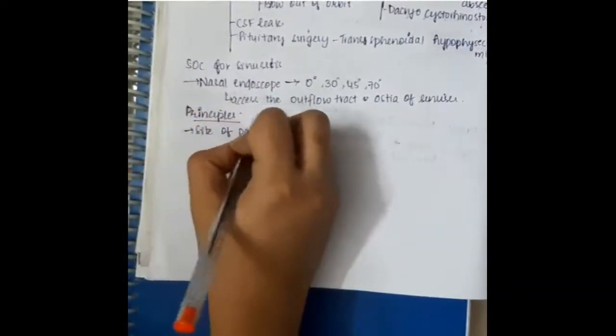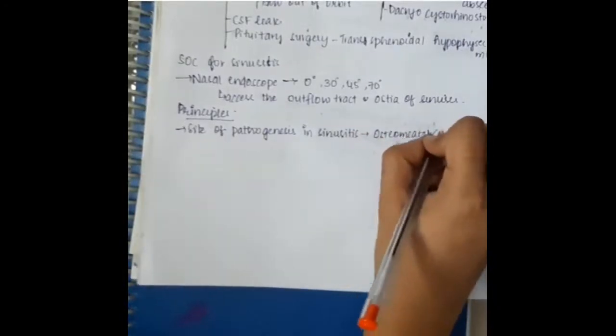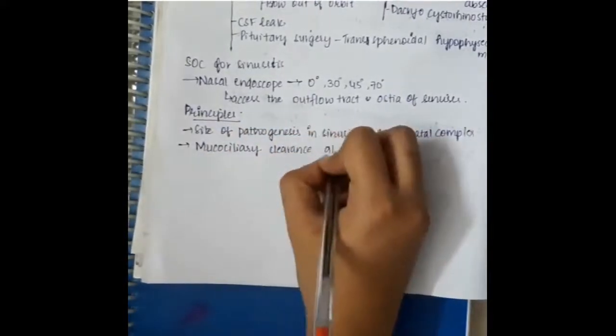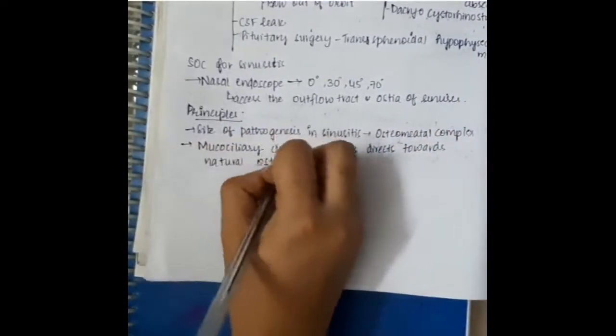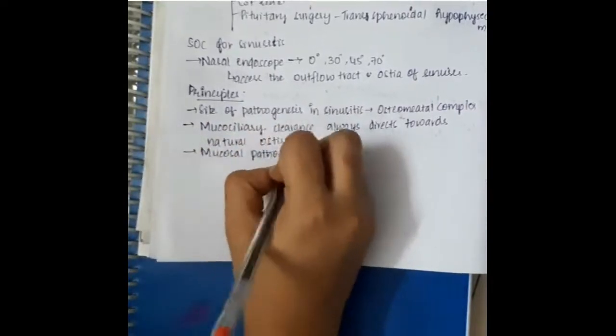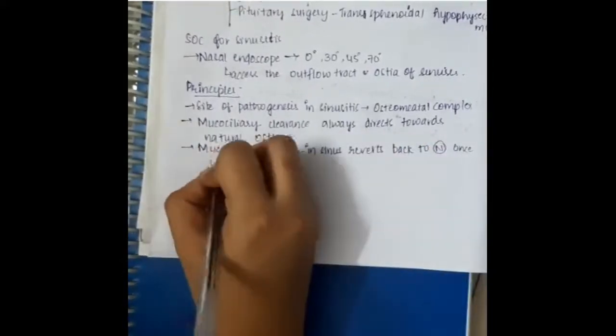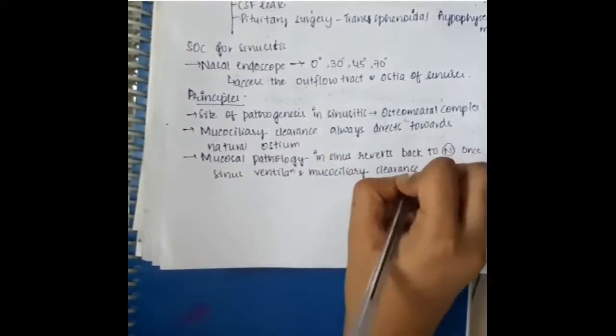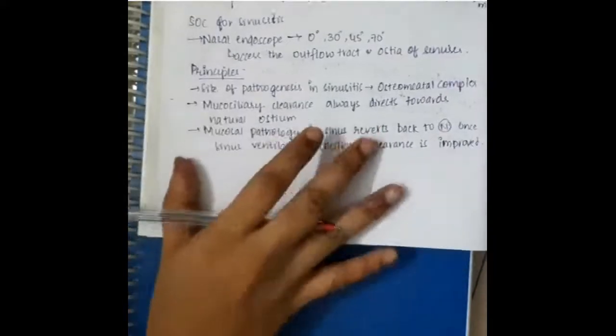The principles include: the site of pathogenesis of sinusitis is the osteomeatal complex. Mucociliary clearance always directs towards the natural ostium. Mucosal pathology in the sinus reverts back to normal once sinus ventilation and mucociliary clearance is improved. Once you remove the pathology through surgery, the mucosal pathology becomes completely normal and all the clearance occurs towards the natural ostium.